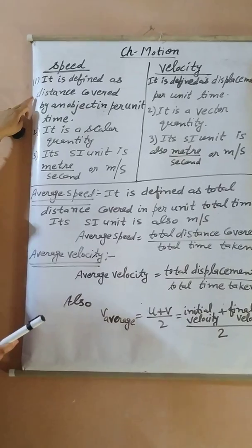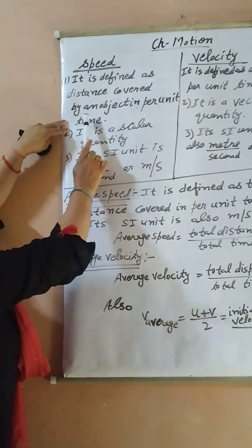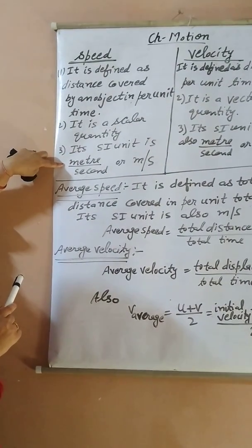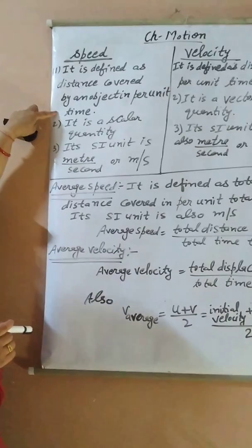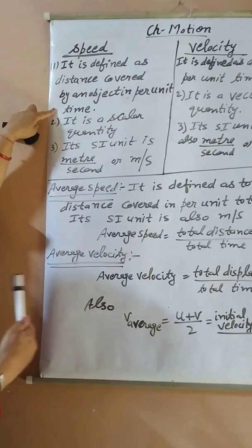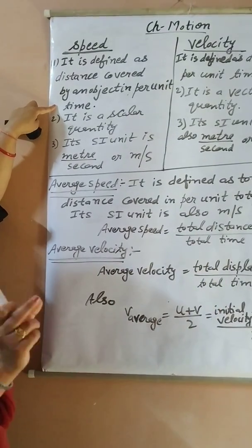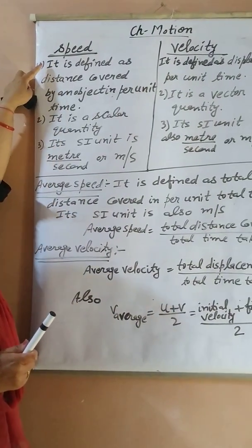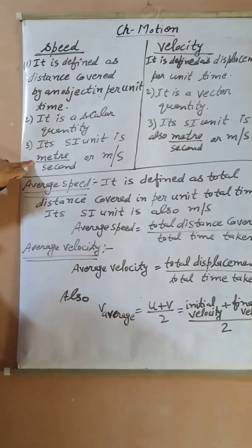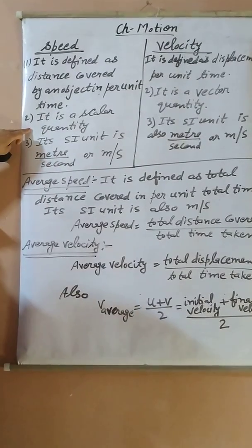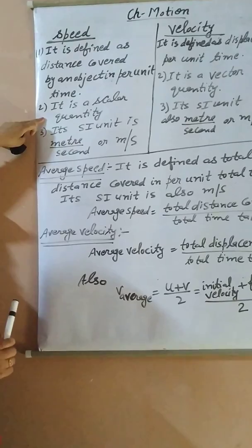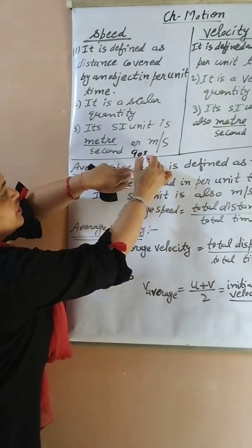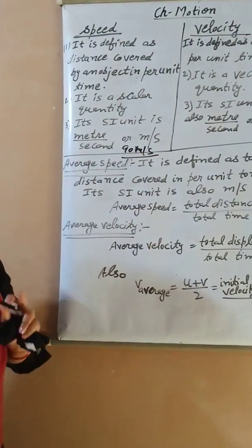What is speed? Speed is defined as distance covered by an object per unit time. It is a scalar quantity. Its SI unit is meter per second. Distance covered per unit time means position changes from one point to another in some duration. When we divide this distance by time, a new quantity comes — that is speed. Its SI unit is meter per second and it does not depend on direction, only magnitude. So it is a scalar quantity. For example, 90 meter per second — so I am talking about speed.